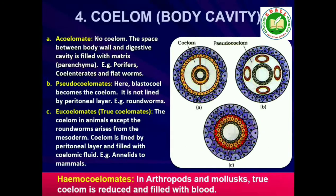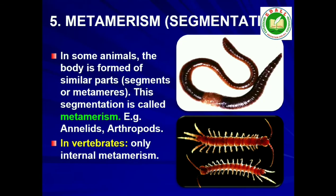5. Segmentation. In some animals, the body is externally and internally divided into segments with a serial repetition of at least some organs. For example, in earthworm, the body shows this pattern called metameric segmentation and the phenomenon is known as metamerism.